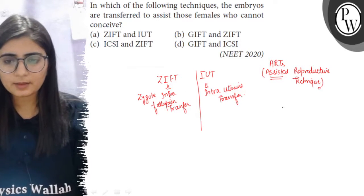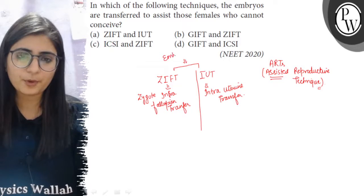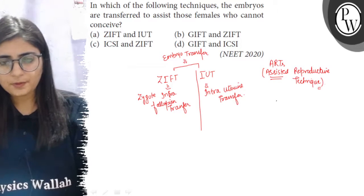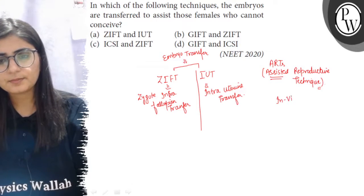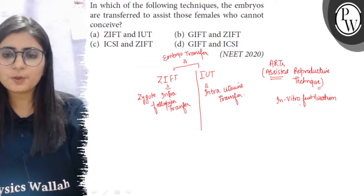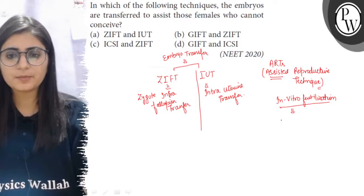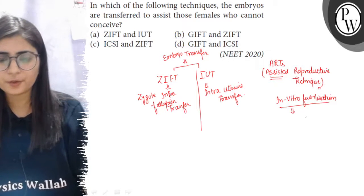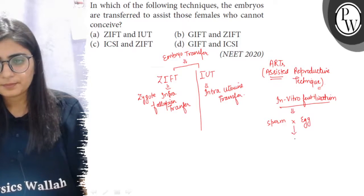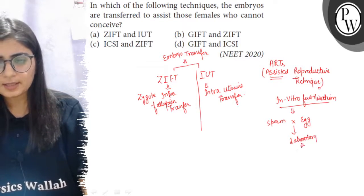What happens in ZIFT? These are techniques included in Embryo Transfer, or ET. In In Vitro Fertilization — 'in vitro' meaning in the test tube — if the female is unable to conceive, the couple can opt for IVF, where sperm is collected from the male and ovum from the female. The sperm and egg are fertilized under controlled laboratory conditions and a zygote is formed.